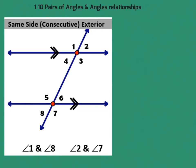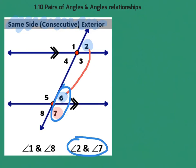The last type is same-side exterior angles — on the same side of the transversal and both in the exterior, such as angles 2 and 7. They are not equal either. The logic: angle 2 equals angle 6 (corresponding), and angles 6 and 7 add to 180° (linear pair), so angles 2 and 7 also add to 180° — they are supplementary.